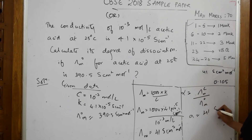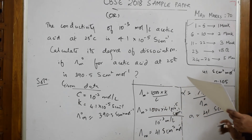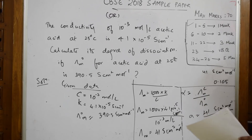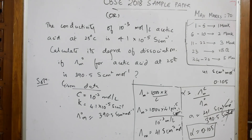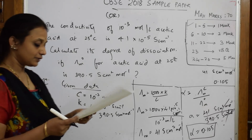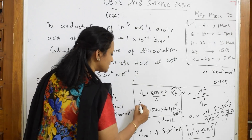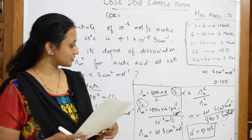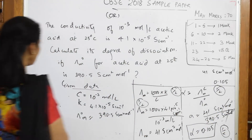Now substitute into the degree of dissociation formula: α = 41 / 390.5 = 0.105. Since it is a ratio, there are no units. For mark distribution: the first formula earns half a mark, substitution earns half a mark, writing the molar conductivity formula earns half a mark, and the final answer earns half a mark — total 2 marks.